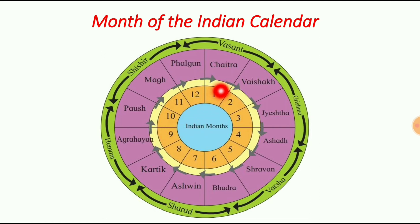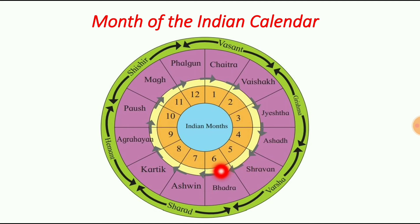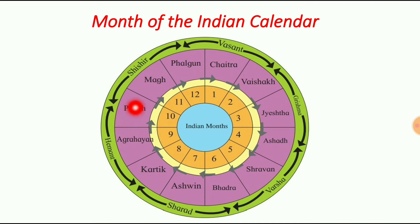The Indian calendar months are: first Chaitra, second Vaishakha, third Jyeshtha, fourth Ashadha, fifth Shravana, sixth Bhadra, seventh Ashwin, eighth Kartik, ninth Agahan (also called Margashirsha), tenth Paush, eleventh Magh, and twelfth Falgun.